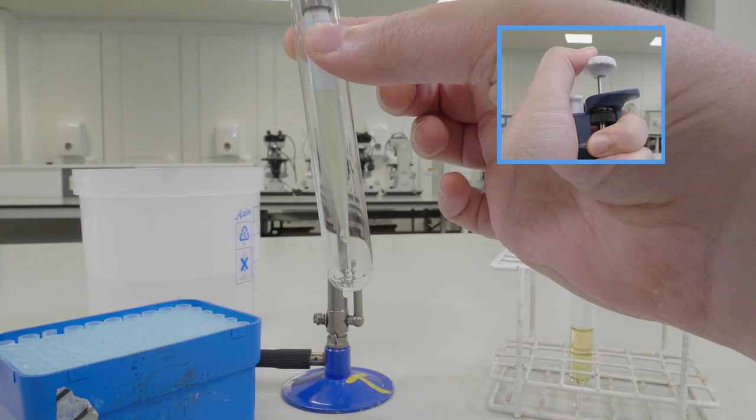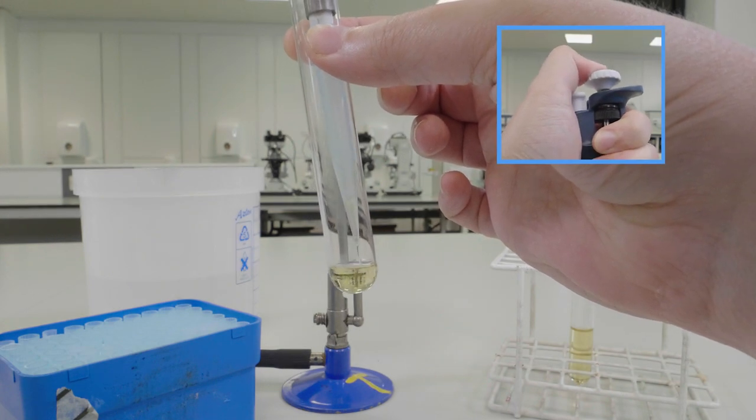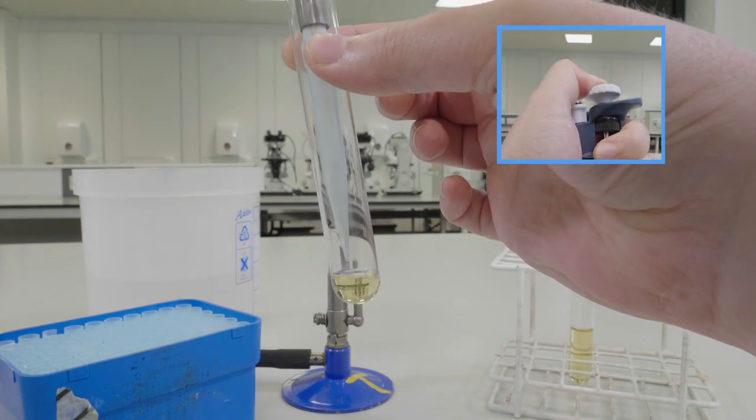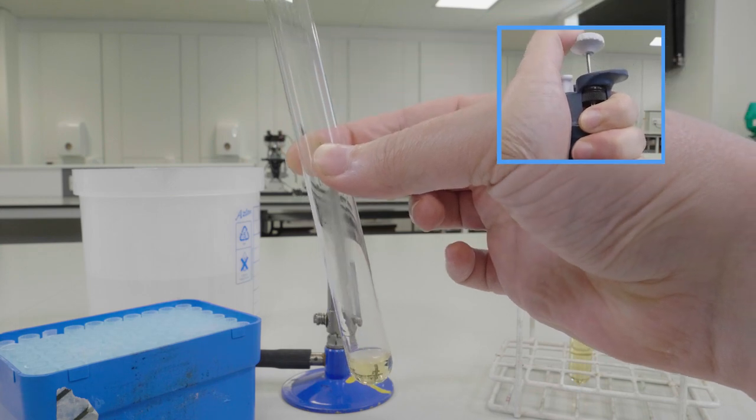To do this, push down to the first stop on the plunger and then the second stop to remove any remaining liquid in the pipette tip.